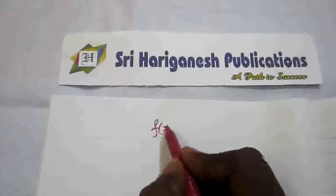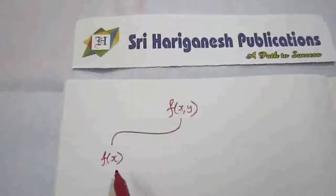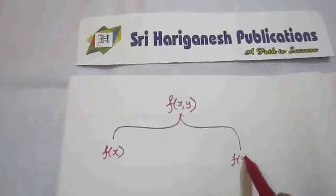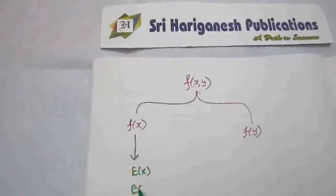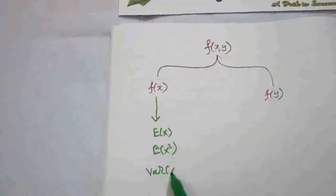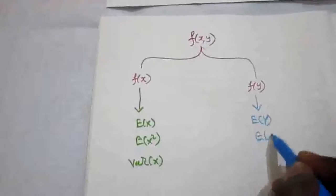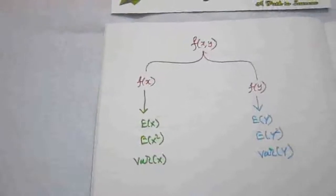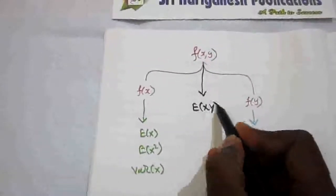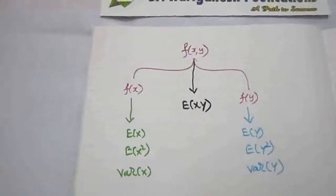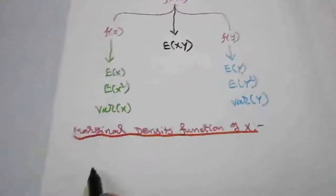We have to calculate from f(x, y), which is given. From f(x, y), we find f(x), the marginal density function of x, and the marginal density function of y. From f(x) we find E(x), E(x²), and variance of x; from f(y) we find E(y), E(y²), and variance of y. And from f(x, y) we find E(xy). These are all the quantities needed for the correlation coefficient.